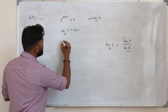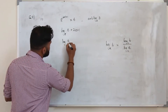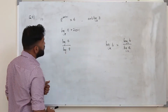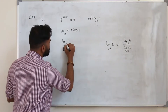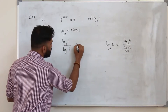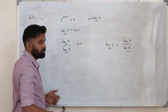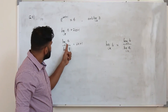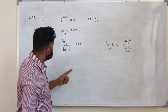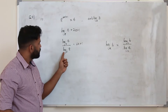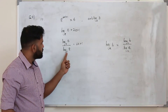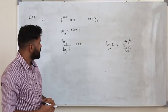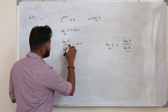So in this case, you can write it as log 6 divided by log 8, and we need base 2 — so just put it as base 2. Log 8 to the base 2 is 3. And bring the 1 to the other side.